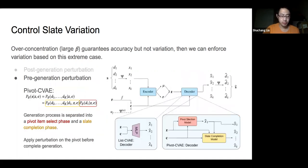So we propose to apply perturbation before the majority part of the generation, which is a pre-generation perturbation method. Mechanically, we can separate the generation process into two phases. First, we select a pivot item for a certain position. Then we complete the slate based on the pivot.